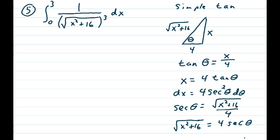When doing the simple tan, I need to bring out the sister function, which is secant θ. So sec θ in that triangle is the hypotenuse over the adjacent, which is √(x²+16)/4. Multiplying both sides by 4, I get √(x²+16) = 4 sec θ.